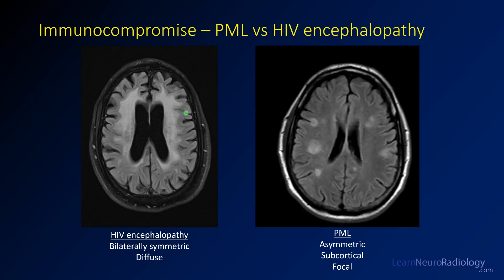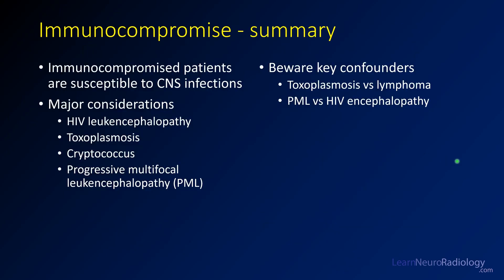Comparing the HIV encephalopathy case to this PML case highlights the key distinction: HIV encephalopathy is bilaterally symmetric and diffuse, whereas PML is subcortical, asymmetric, and focal. In summary, immunocompromised patients are susceptible to a different set of CNS infections, with the main considerations being HIV leukencephalopathy, toxoplasmosis, cryptococcus, and PML. Key confounders include differentiating toxoplasmosis from lymphoma — which may require a trial of toxoplasmosis therapy — and distinguishing PML from HIV encephalopathy based on whether white matter changes are symmetric and bilateral versus irregular and subcortical.